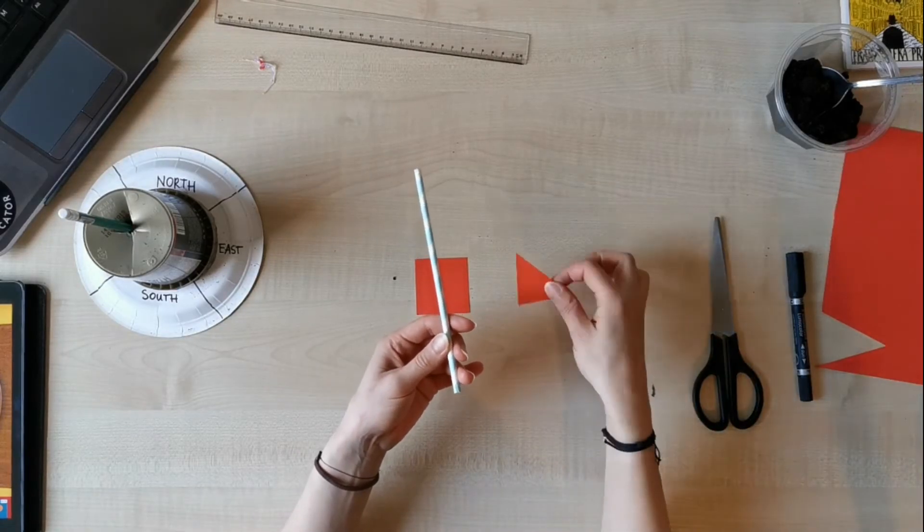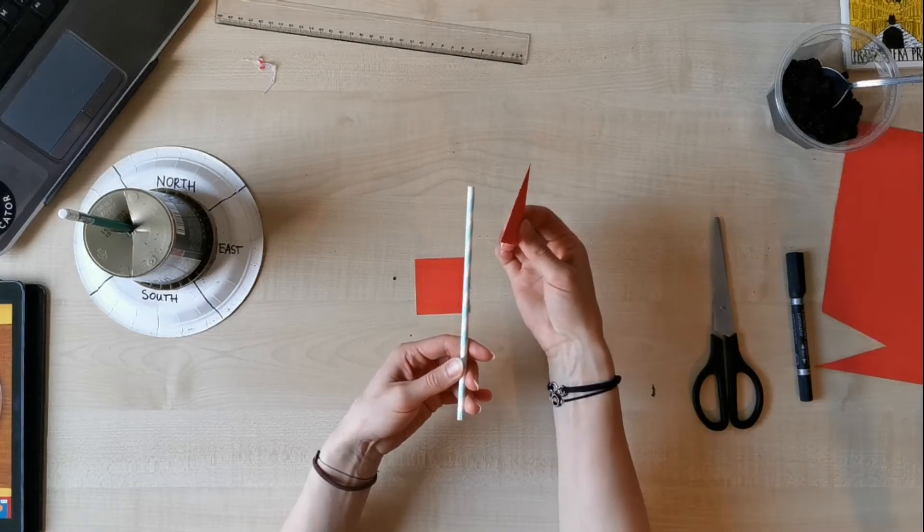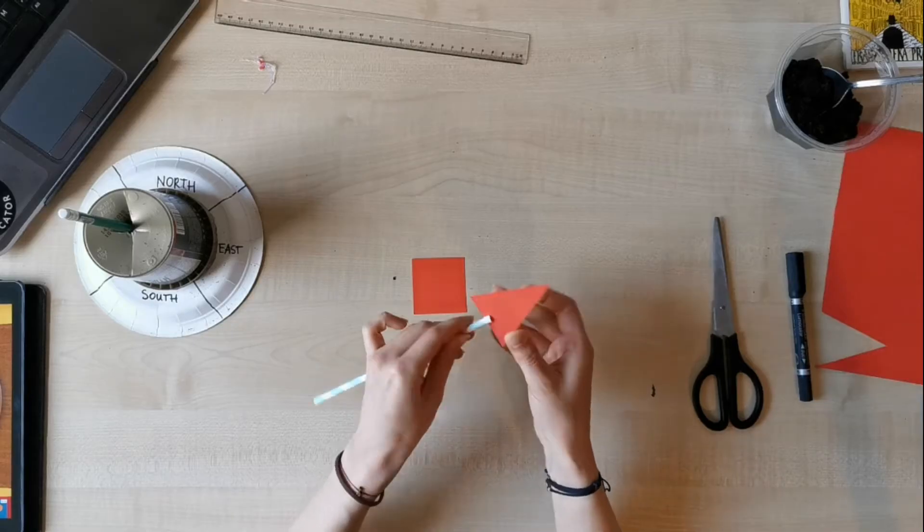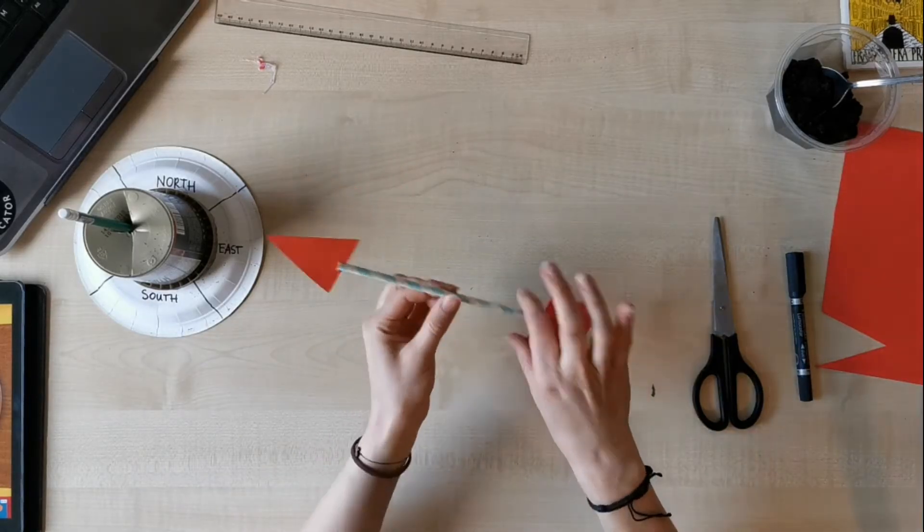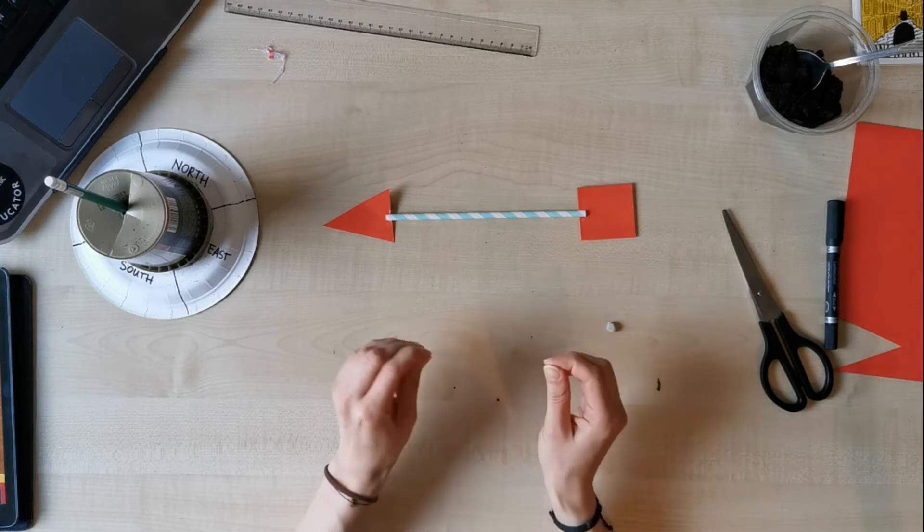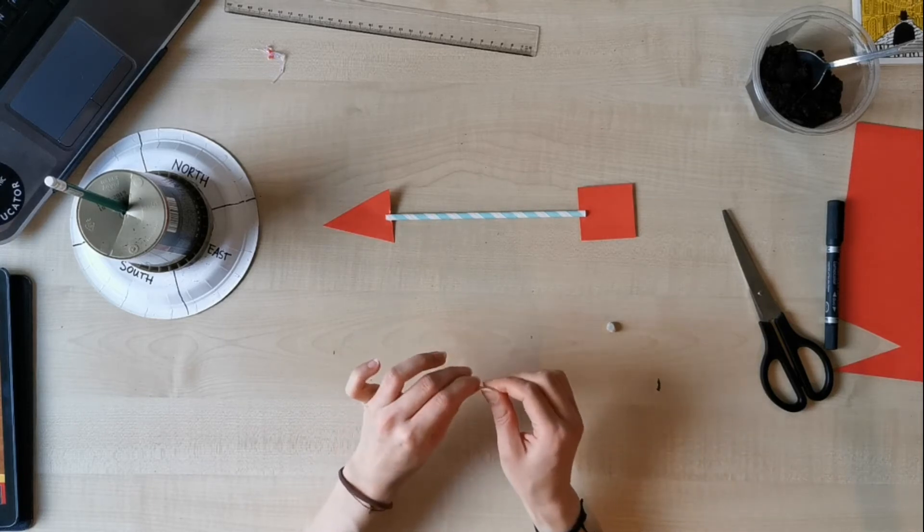Now we are sliding the triangle onto one end and the square onto another. And we have the vane. Now in this part you will probably need your parents' help.